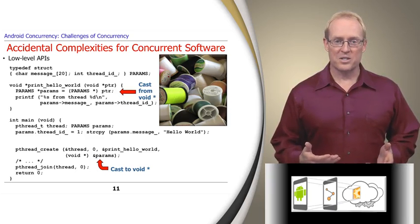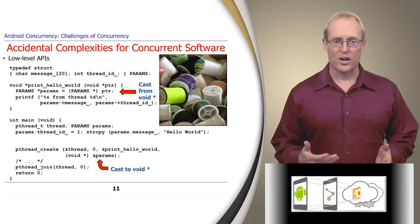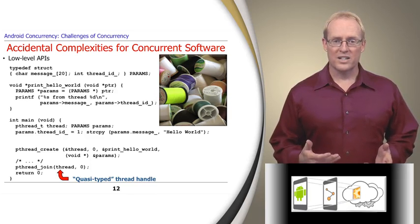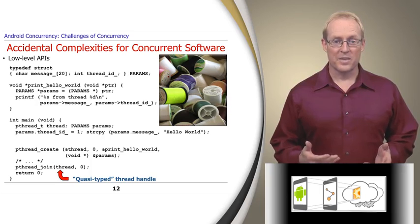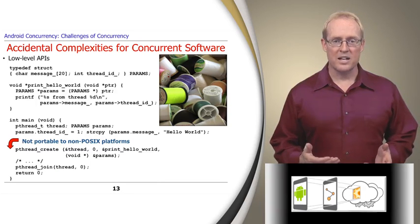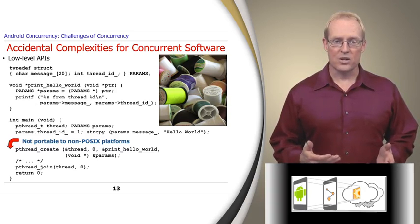Casts disable compiler type checking, which allows subtle errors to creep into your software. Another problem is the use of quasi-typed thread handles, which are error-prone since compilers can't provide effective type checking if the wrong type of handle is accidentally passed to a pthread function. Finally, since we're programming to the pthreads API explicitly, this code won't be portable to non-POSIX platforms such as Windows or VxWorks.